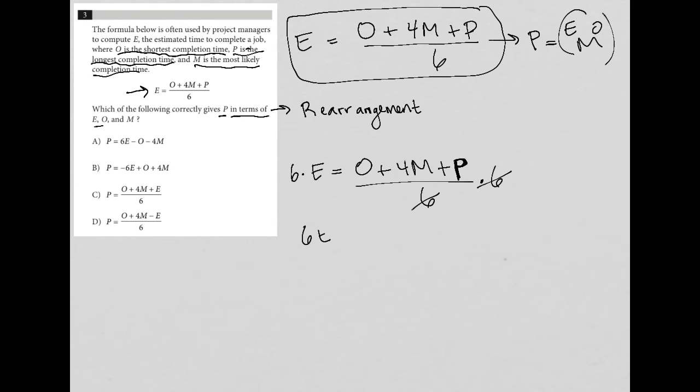So I have six E equals O plus four M plus P. And then I want to remove O. So I'm going to subtract O. I also want to remove four M. So I'm going to also subtract four M. And I'm going to do that to both sides because that's what we do with algebra. And therefore the O's on this side cross out, the four M's on this side cross out, and I'm left with just P, which is exactly what I wanted. It is on the right-hand side instead of the left-hand side, but that doesn't really matter so much.